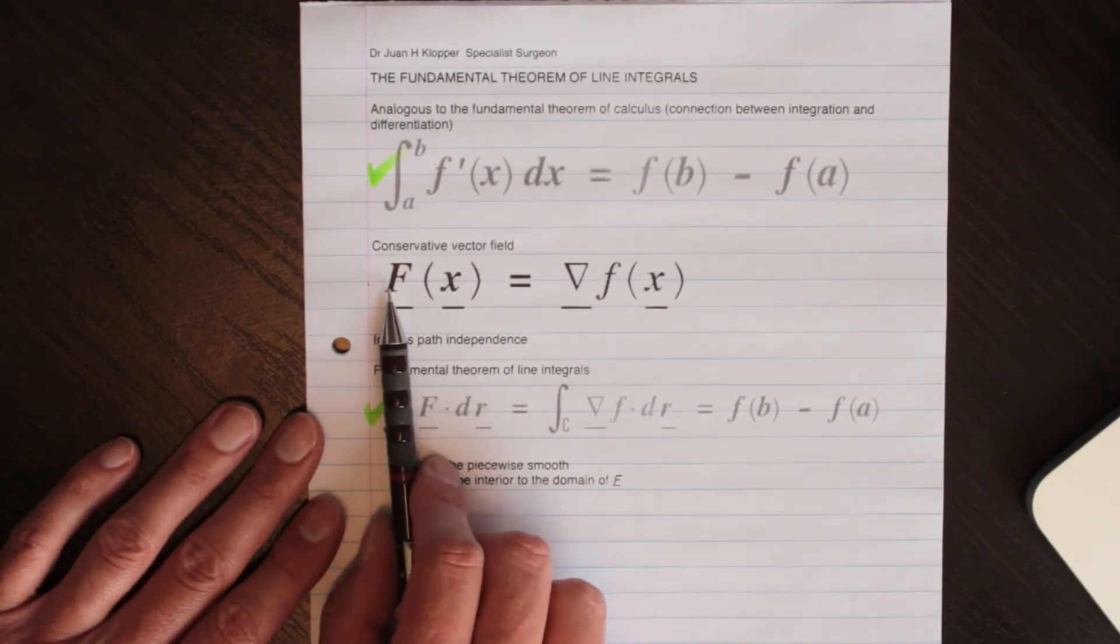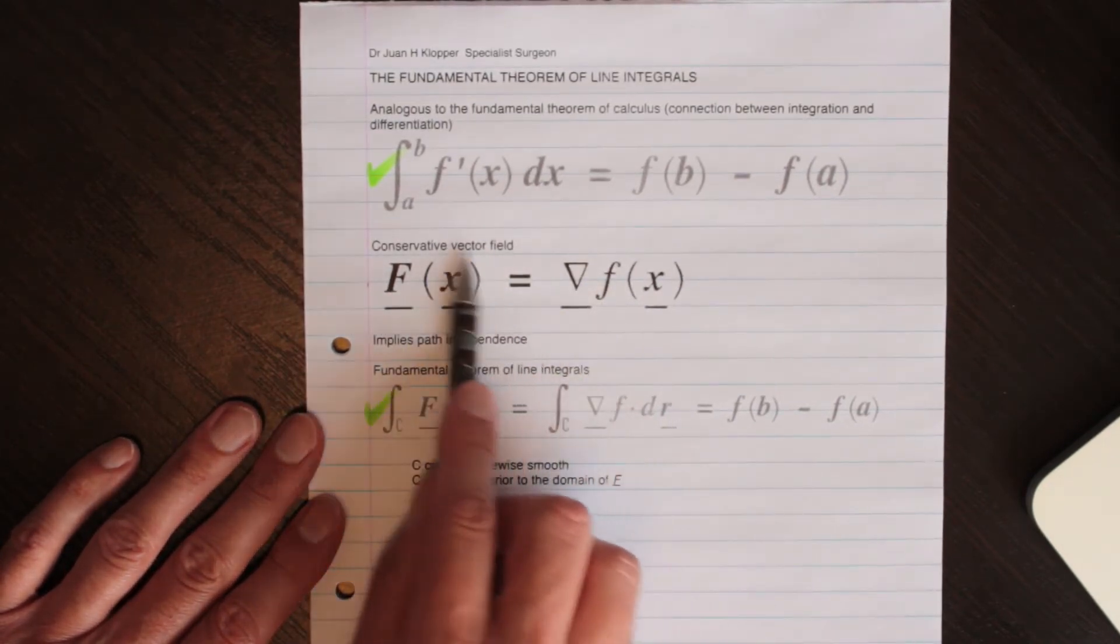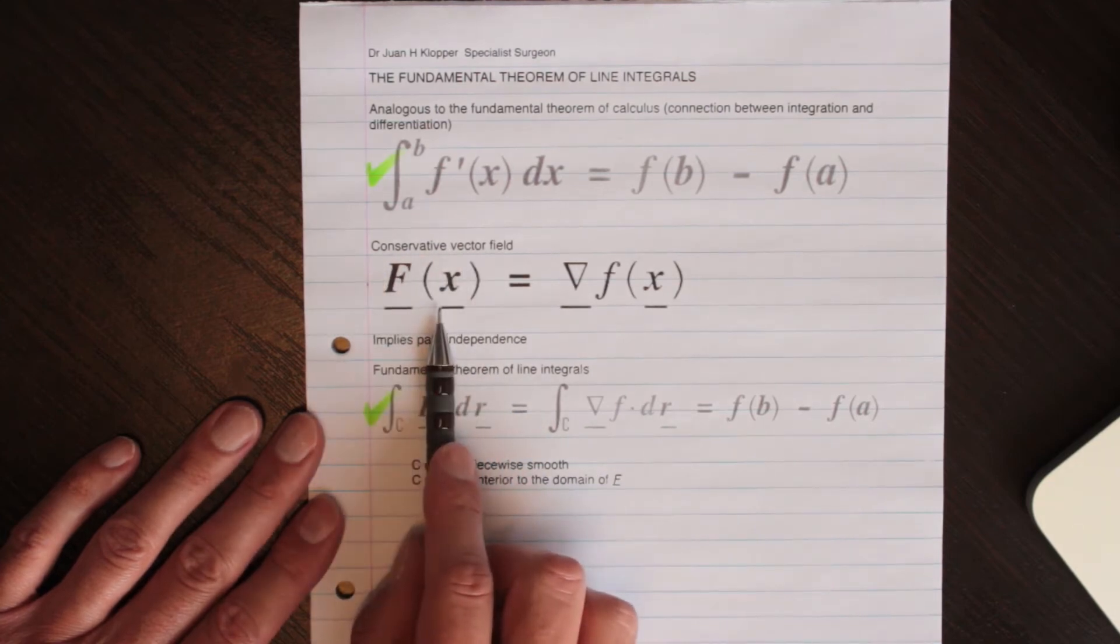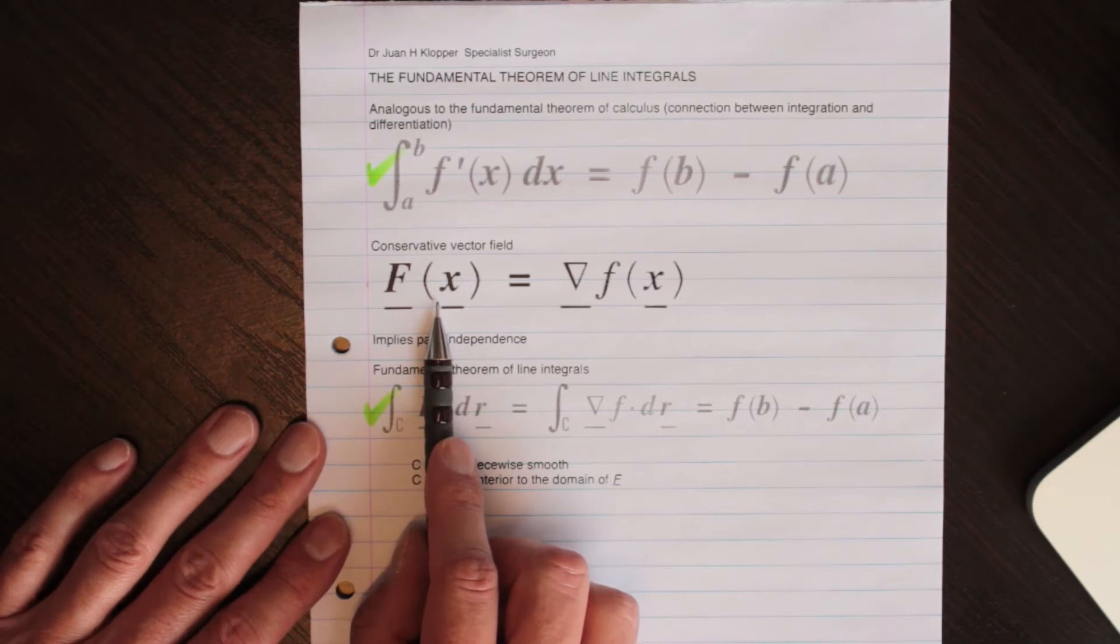And if it is the gradient of some function, we call this a conservative vector field. Now a conservative vector field has certain consequences.